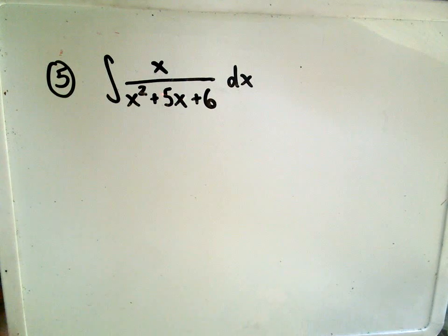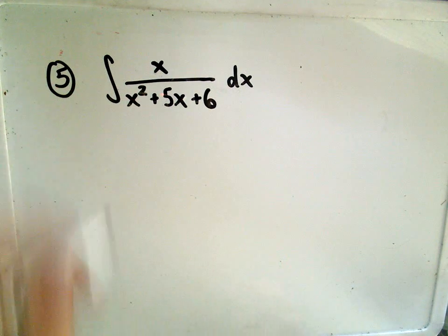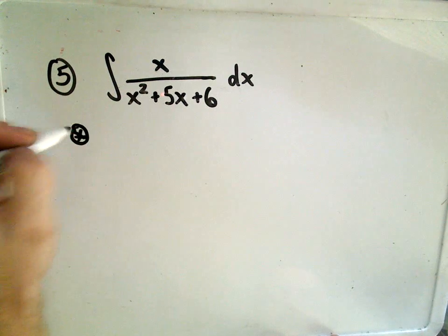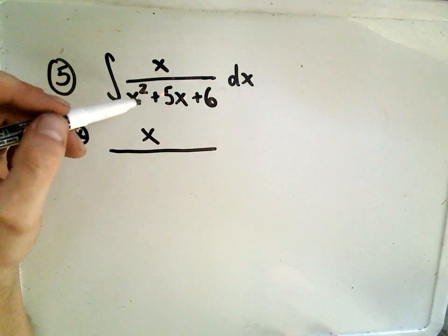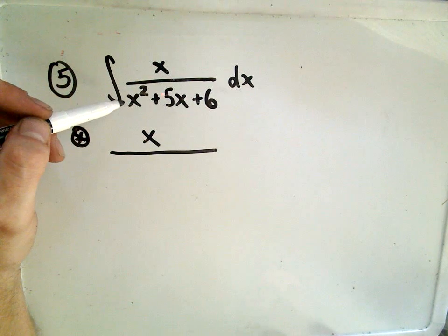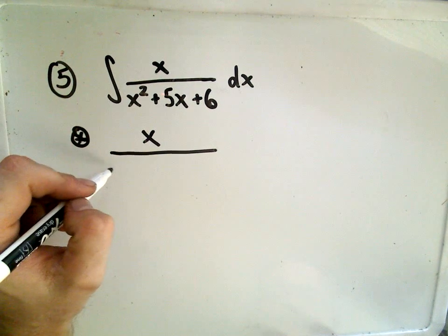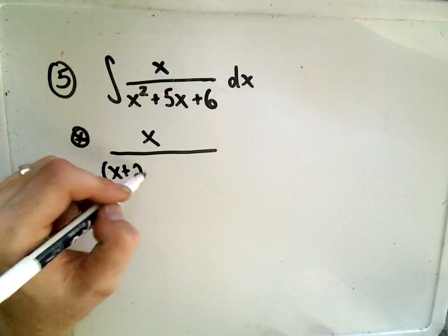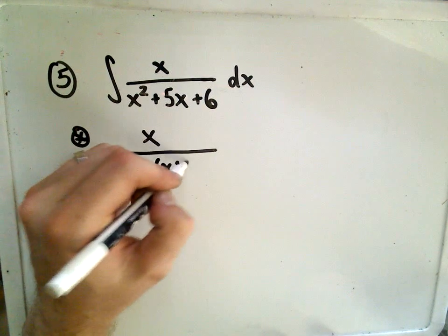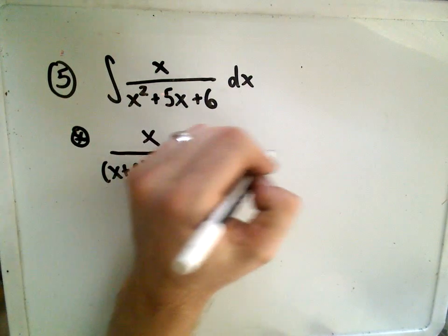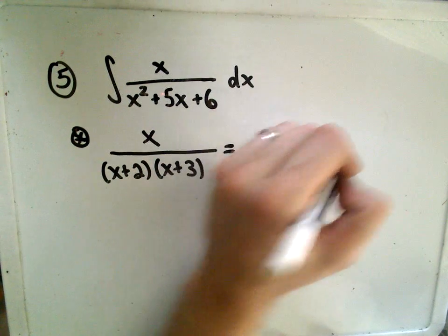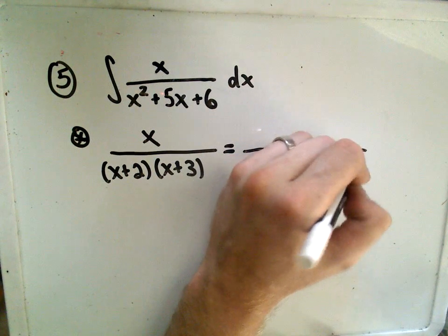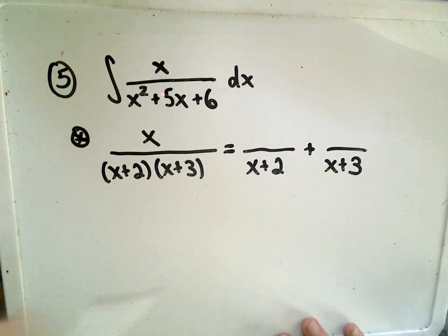So this is just going to be a good old partial fractions problem. Remember, we have to do our partial fraction decomposition on this rational function. The denominator, x squared plus 5x plus 6, just factors as x plus 2 times x plus 3. We break it up so that each factor gets its own fraction, and then on top we just have to put constants, A and B.